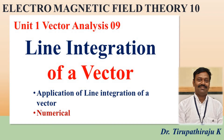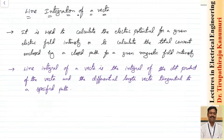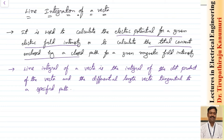Today we are going to discuss line integration of a vector. Before going into this, let us see what the application is. It is used to calculate the electric potential for a given electric field intensity. This is in electrostatics, or it can be used in magnetostatics for calculating the total current enclosed by a closed path for a given magnetic field intensity. These are some of the applications of line integral. Whichever basics are required in multiple chapters, I am keeping them in chapter number one.